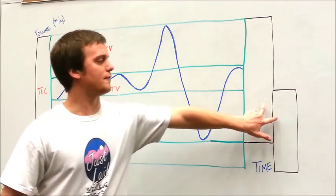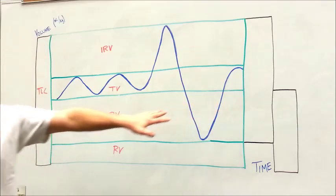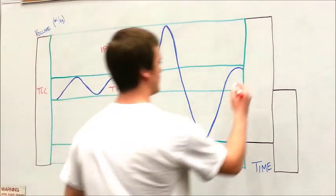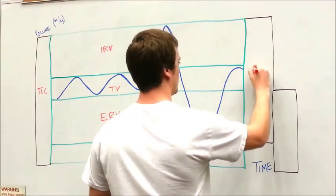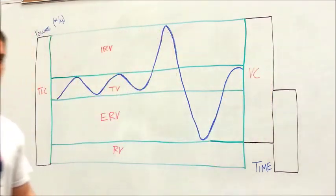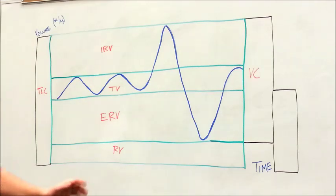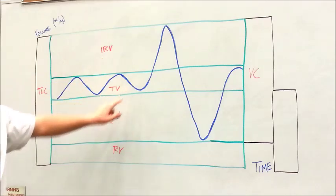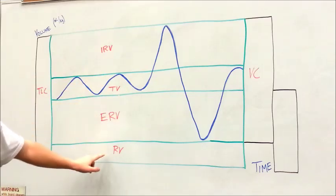Now, there are two other boxes here that are clinically important when talking about lung volume. Those two boxes are your VC, which is your vital capacity. Your vital capacity includes your inspiratory reserve volume, your tidal volume, and your expiratory reserve volume, but not your residual volume.